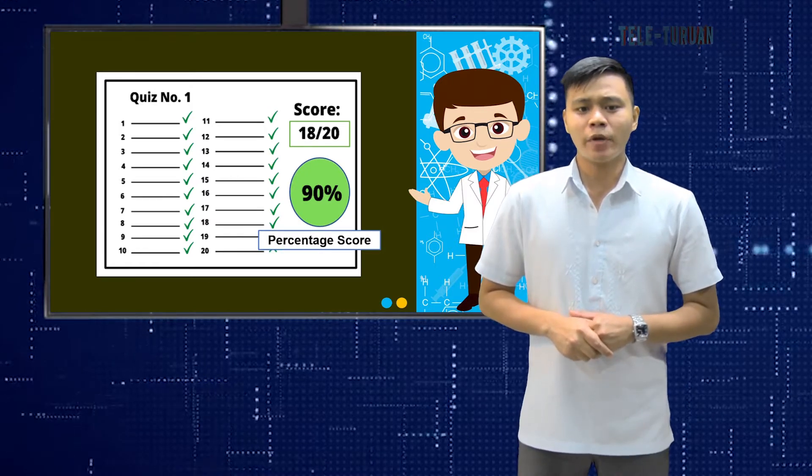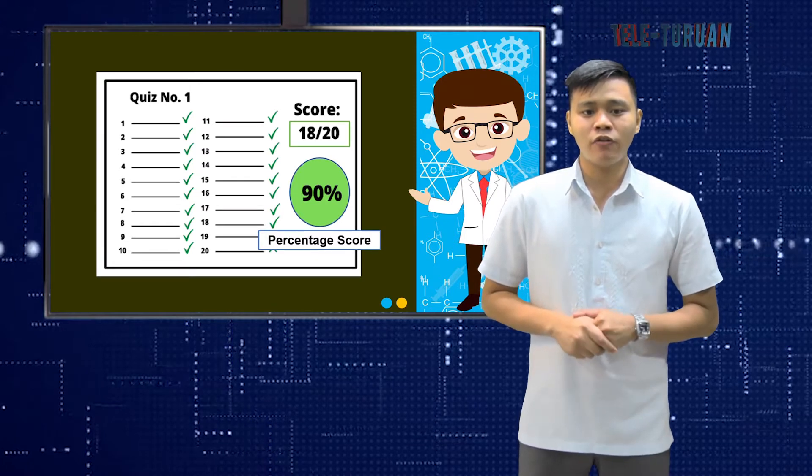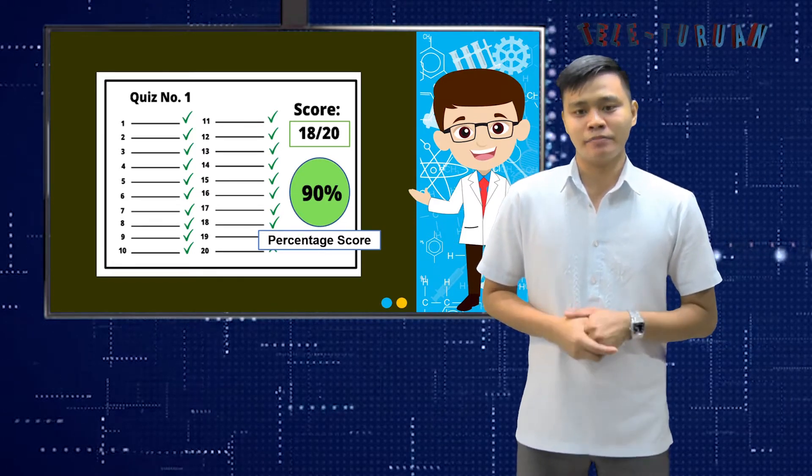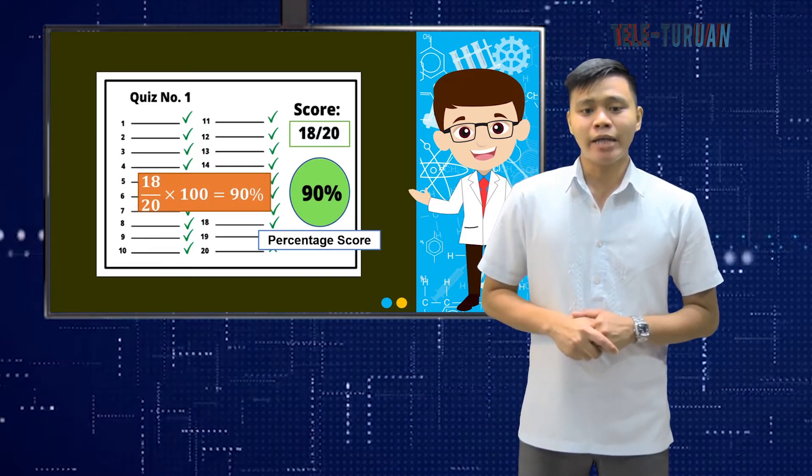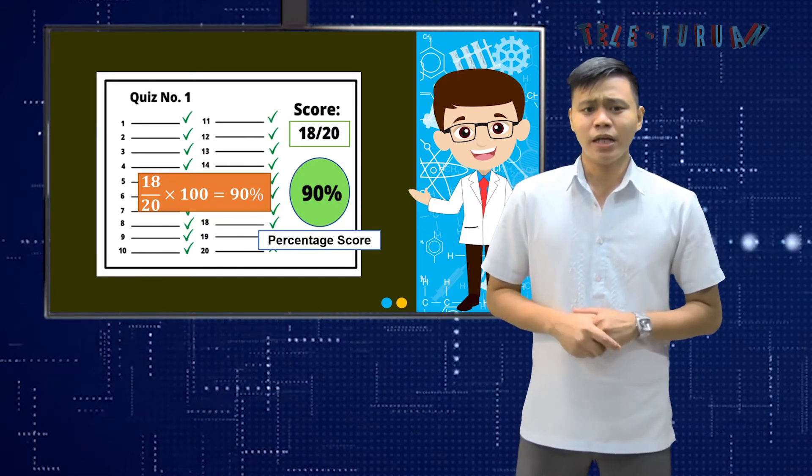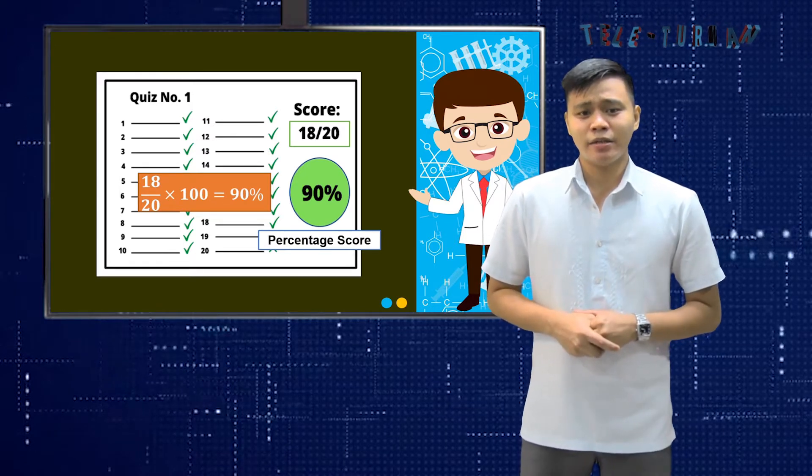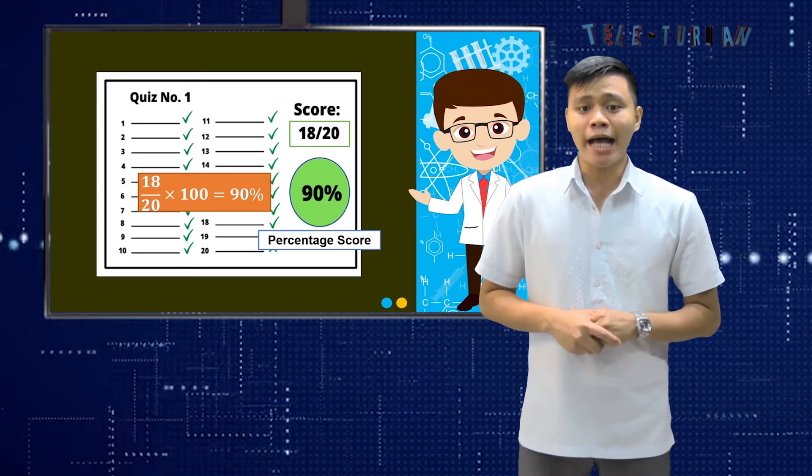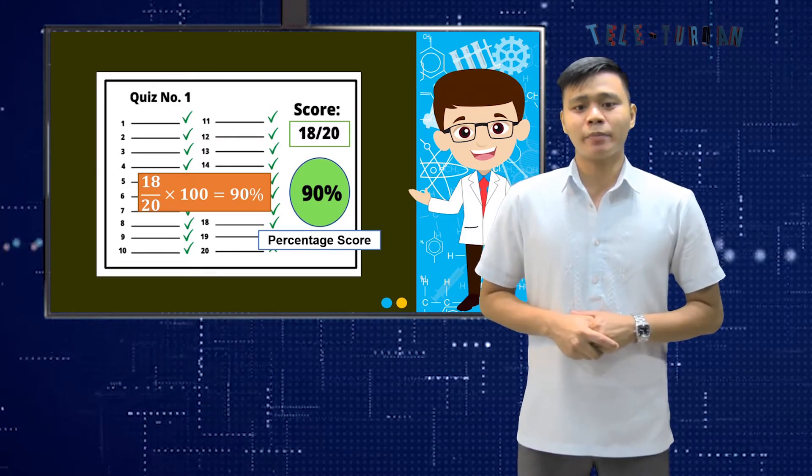If you want to get your percentage score in a test, you simply divide your score over the total test item and multiply it by 100. So in this example, we have 18 divided by 20 times 100 is equal to 90%. Now, why do we need to multiply the percentage score by 100? Because percentage would also mean an amount in 100 or by 100. It is often represented by the percent sign.